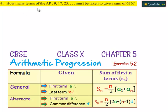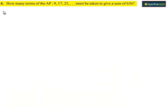Moving on to the fourth question: how many terms of the AP 9, 17, 25... must be taken to give the sum of 636?